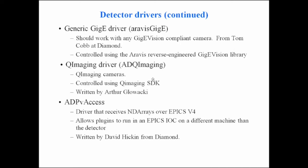There's a new driver Arthur Glowacki from the APS wrote for QImaging cameras. And there's a driver still in beta that receives NDArrays over EPICS V4 on the network. It works with a companion plugin that takes NDArrays, converts them to EPICS V4 data structures, and puts them out on the network. This driver receives those and publishes them as NDArrays in an IOC on a remote machine.